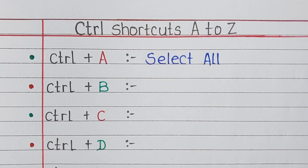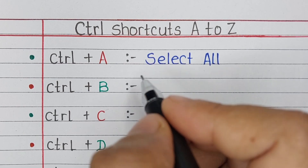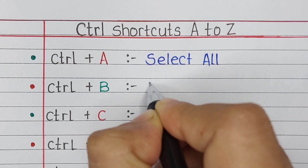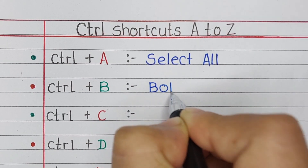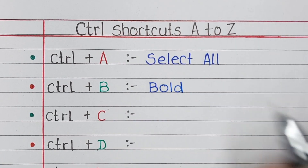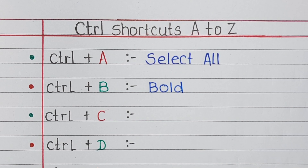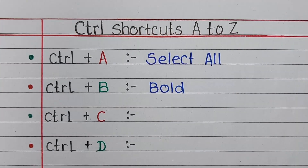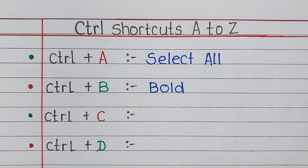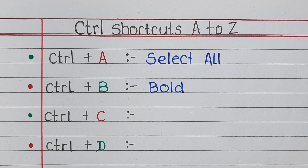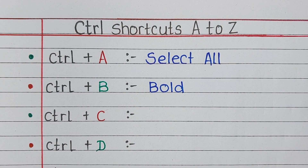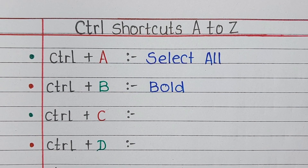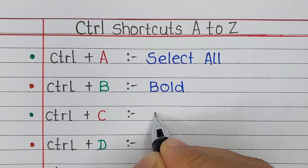First one is Control A. Control A is the shortcut for Select All. Next is Control B. Control B is the shortcut for Bold.